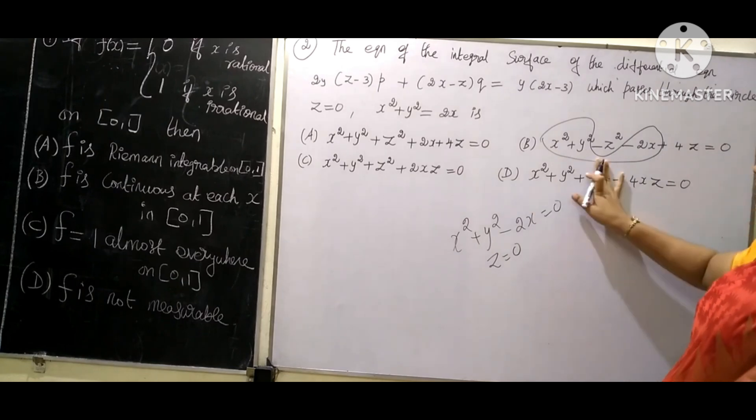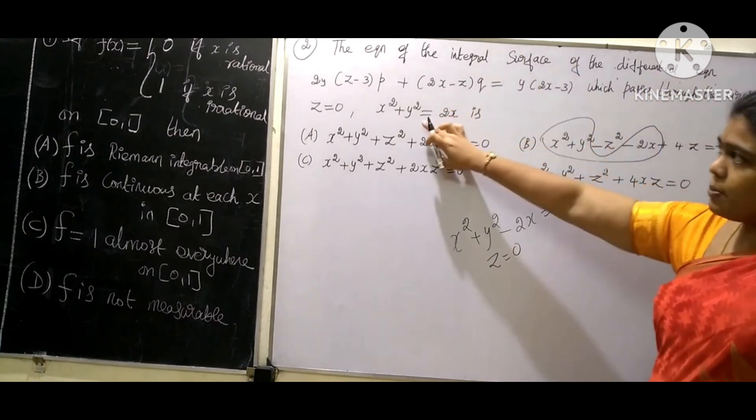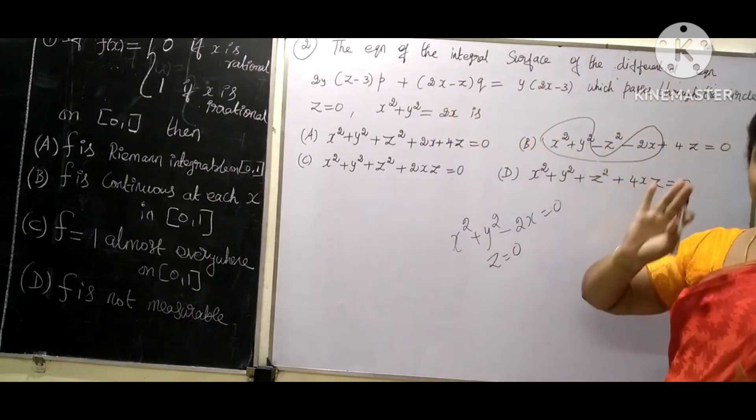Now if we substitute z = 0, x² + y² = 2x and z = 0 are satisfied.